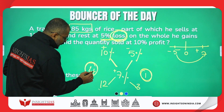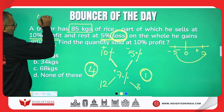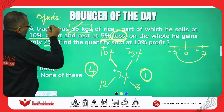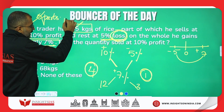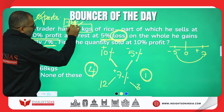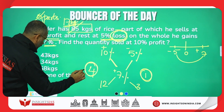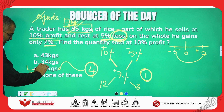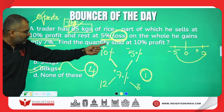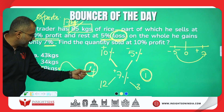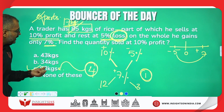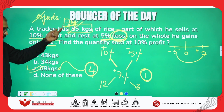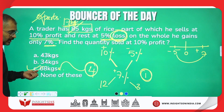If I take 4 parts and 1 part, that is totally 5 parts. If I divide the total quantity 85 kgs into 5 parts, 1 part will be equal to 17 kgs. 1 part 17 kgs means 4 parts has to be 68 kgs. That is what is asked — what is the quantity sold at 10% profit? I am selling it at 4 parts of this 85 kgs, which is nothing but 68 kgs. 4 into 17 is 68 kgs.